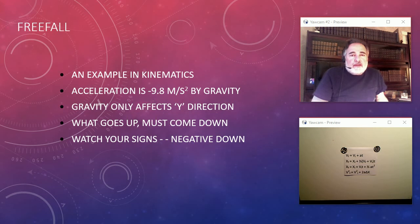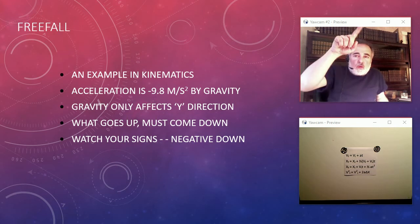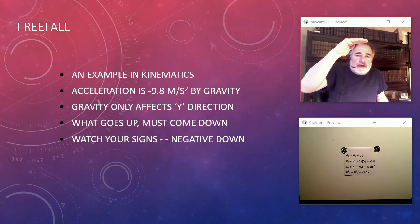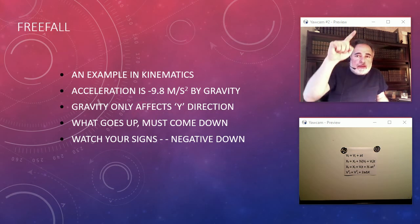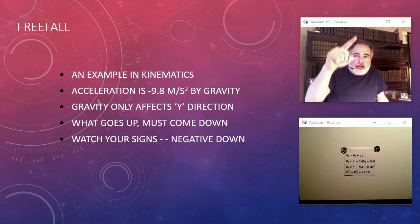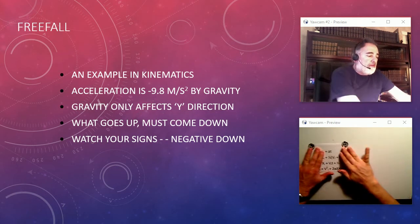On our planet, the acceleration due to gravity is negative 9.8 meters per second squared. Gravity only affects the y direction, not the x direction. When I throw something up, at the very top its velocity is zero. From the point of leaving my hand to coming back down, its acceleration is always negative 9.8 meters per second squared. Its velocity changes as it goes through that parabola.